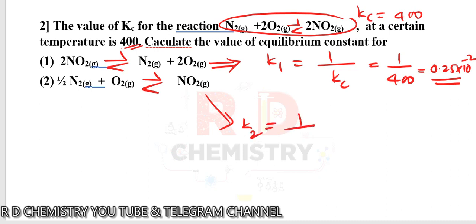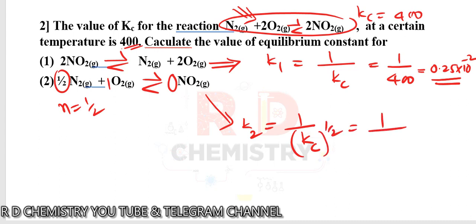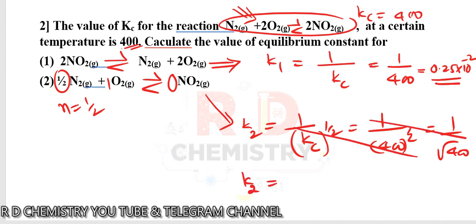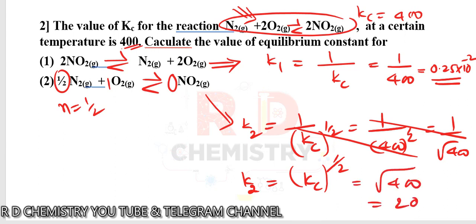For the second related equation, the equation has not been reversed but the original equation has been multiplied by one-half (n = 1/2). Since the equation is not reversed, we keep Kc (not the reciprocal), but raise it to the power n = 1/2. So K2 = Kc^(1/2) = √400 = 20. Remember: if reversed, take reciprocal; if multiplied by n, raise to the power n.